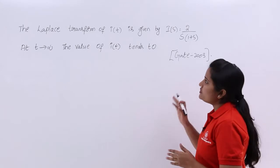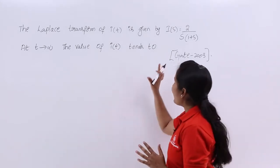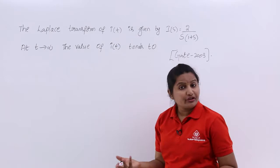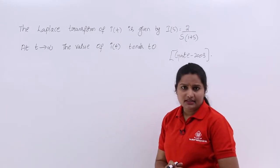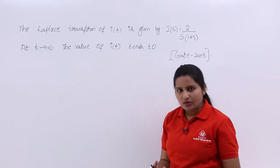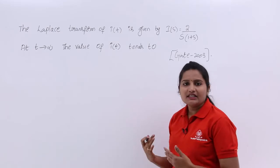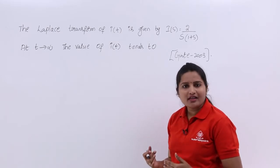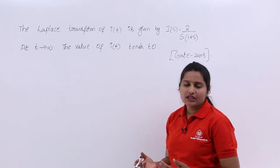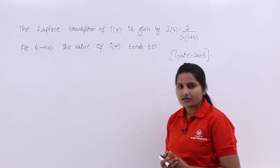We are given the transform of I(t), so here we have the spectrum of I(t), but we do not know the signal itself. Whenever the spectrum is known and the signal is unknown, we can find the initial and final value of the signal by applying the initial and final value theorems.